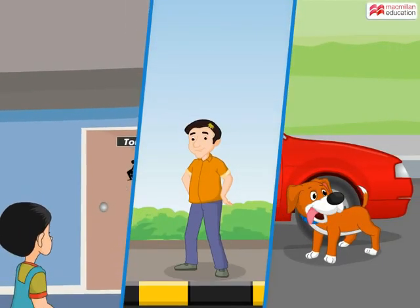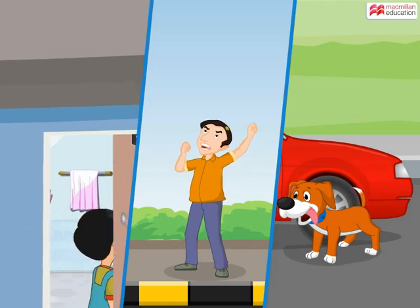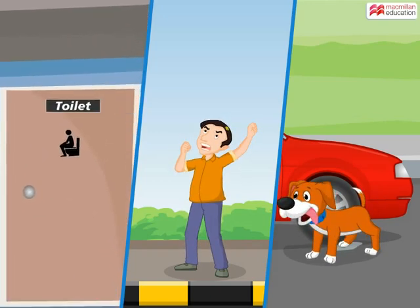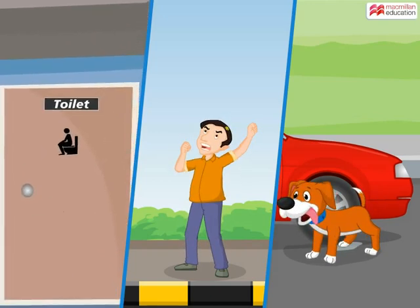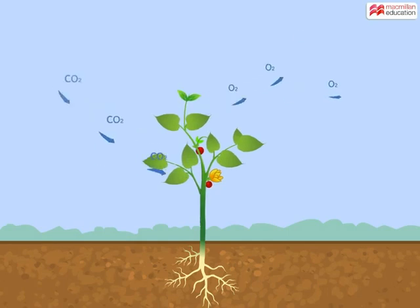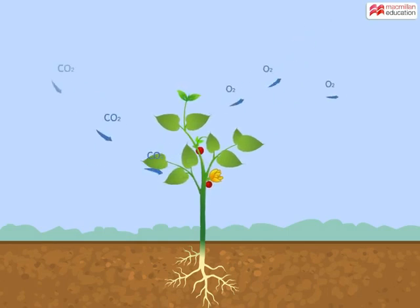Every living thing has a certain mechanism to eliminate waste from their bodies. Oxygen is actually a waste product given out by plants.